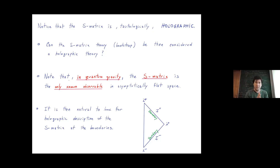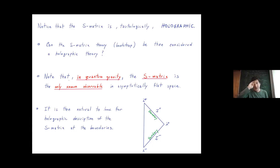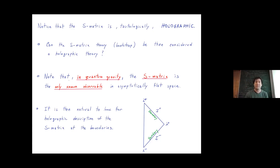So it is natural to look for some holographic description of the S-matrix at the boundaries. Nobody would have taken this seriously long ago because it's just something asymptotic. But there are hints that when gravity is involved, you should really look for something hidden, and I will show you that there was something overlooked for many years, especially when you include gravity in this picture.